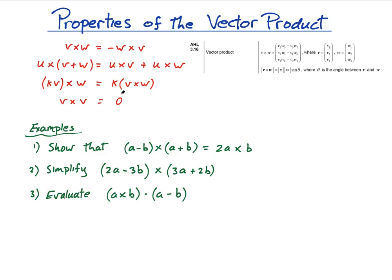You can think of that because the sine of the angle between two vectors, well, the angle between two vectors that are the same is zero. So you end up multiplying it by sine of zero, which gives you zero.